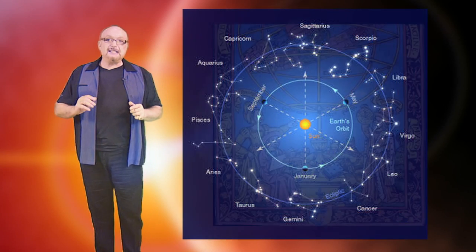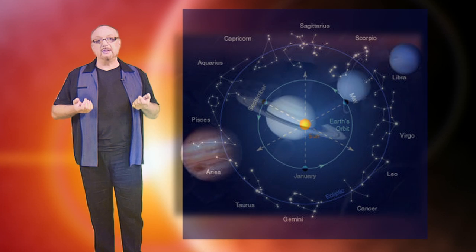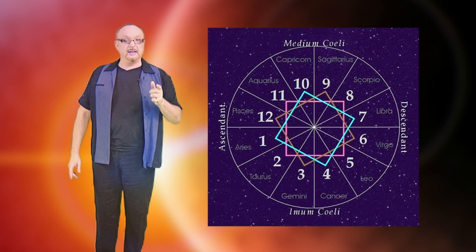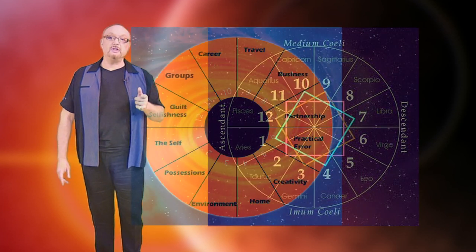The signs of the zodiac are the universal backdrop against which we perceive the planets. And the planets are the energies operating in our lives. But it is the houses that make these energies unique and make these energies personal.